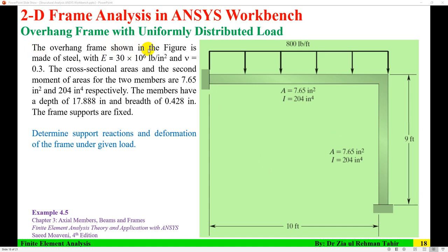The problem statement is: the overhang frame shown in the figure is made of steel, with modulus of elasticity 30×10⁶ PSI and Poisson's ratio 0.3. The cross-sectional area and second moment of area for the two members are 7.65 in² and 204 in⁴ respectively.